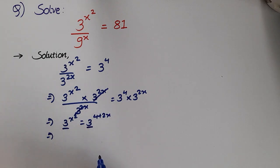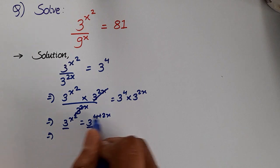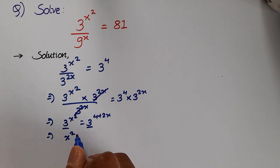Now we have the same base. If the bases are the same, their exponents will be equal to each other. So x² = 4 + 2x.